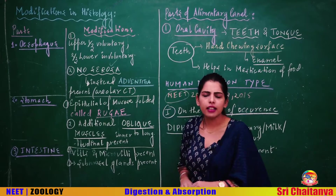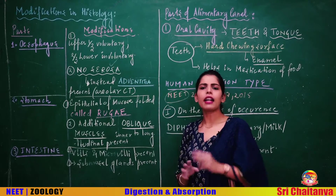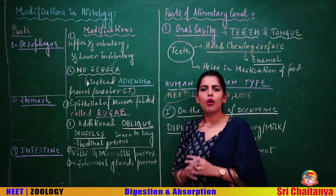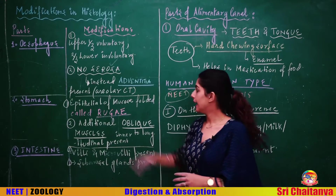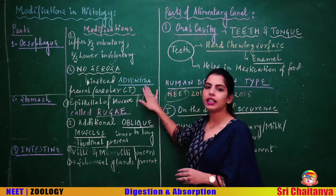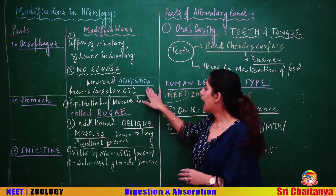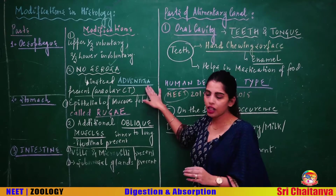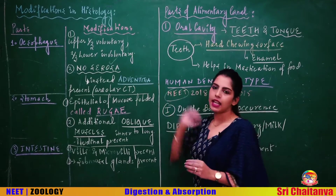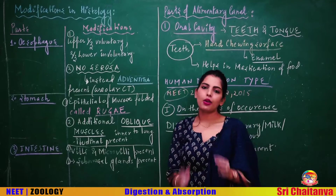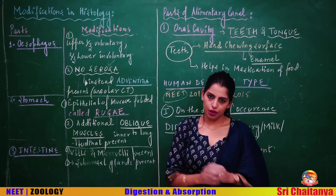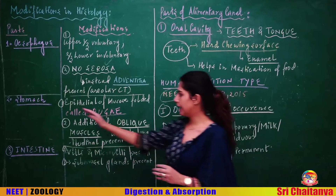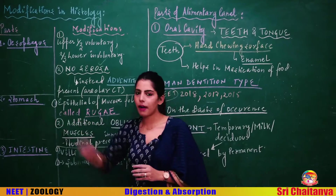The second modification in the esophagus is that it has no serosa. Instead of serosa, it has a layer called adventitia, which is areolar connective tissue. Now let us look at modifications in the stomach.